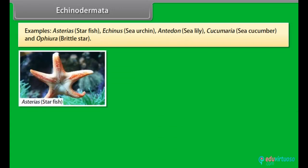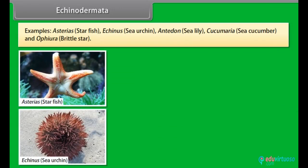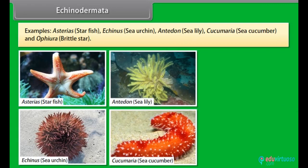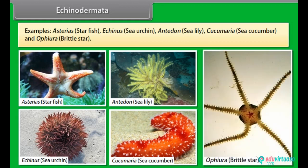Examples: Asterias, i.e. starfish; Echinus, i.e. sea urchin; Antedon, i.e. sea lily; Cucumaria, i.e. sea cucumber; and Ophiura, i.e. brittle star.